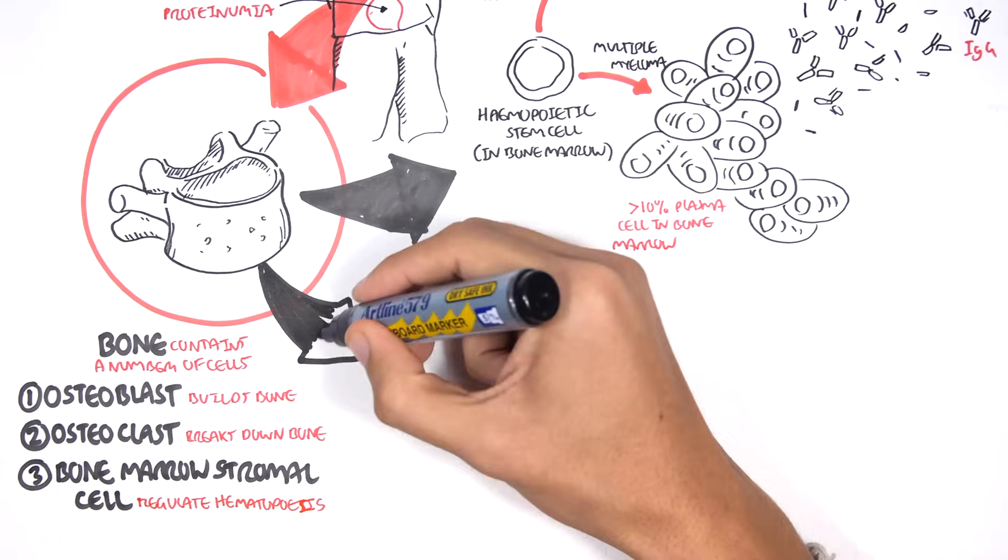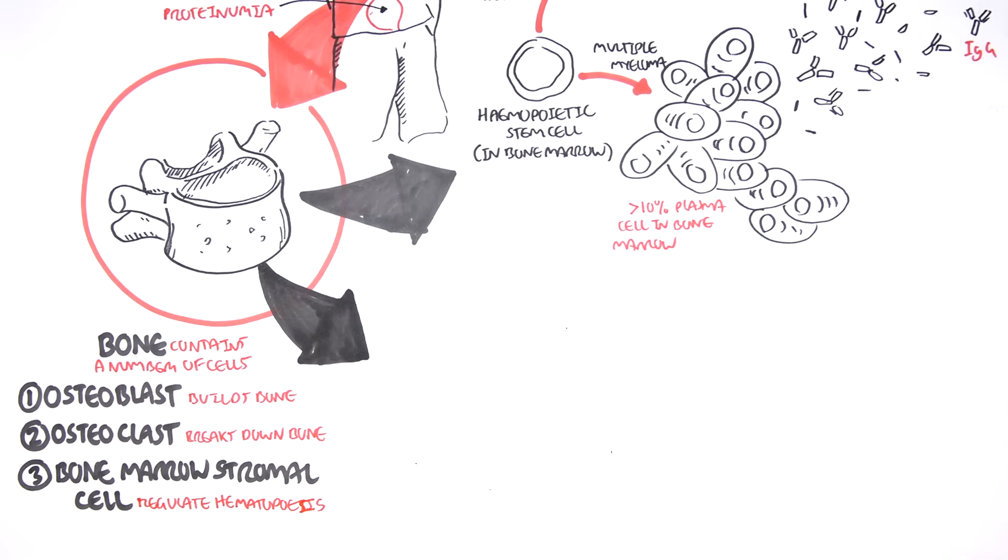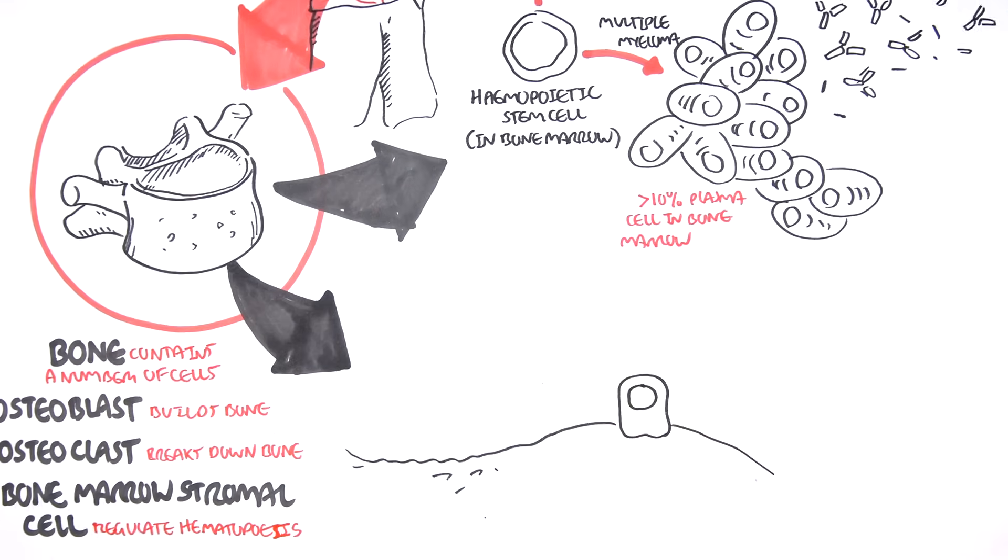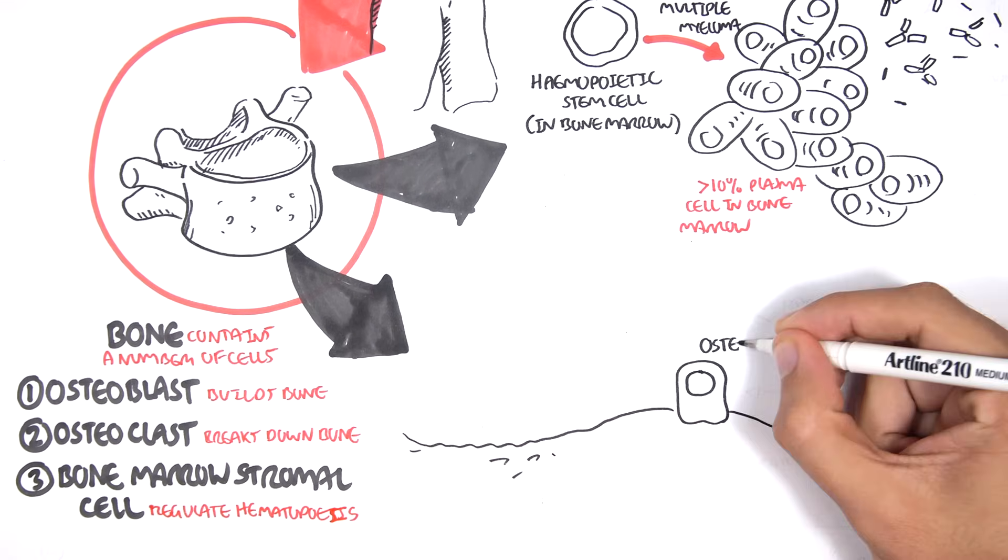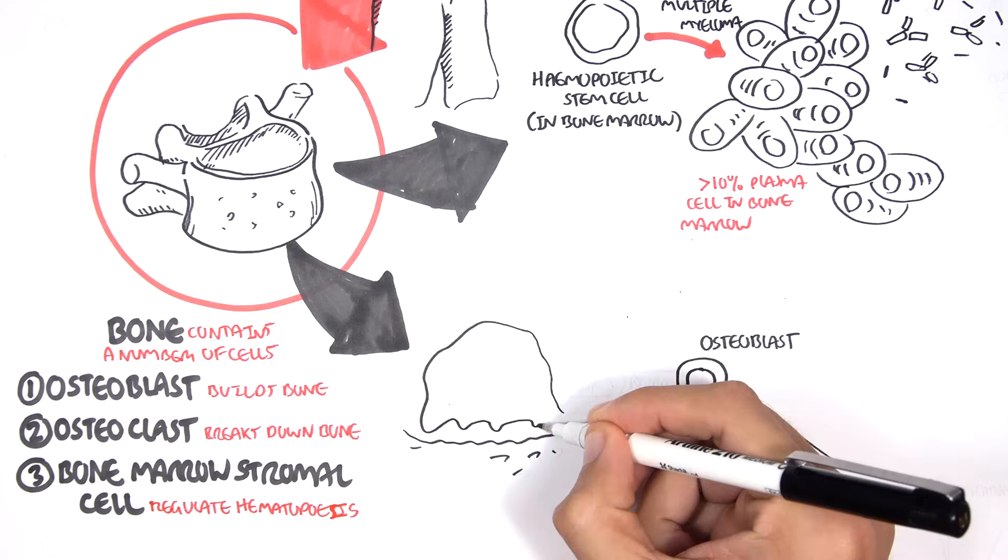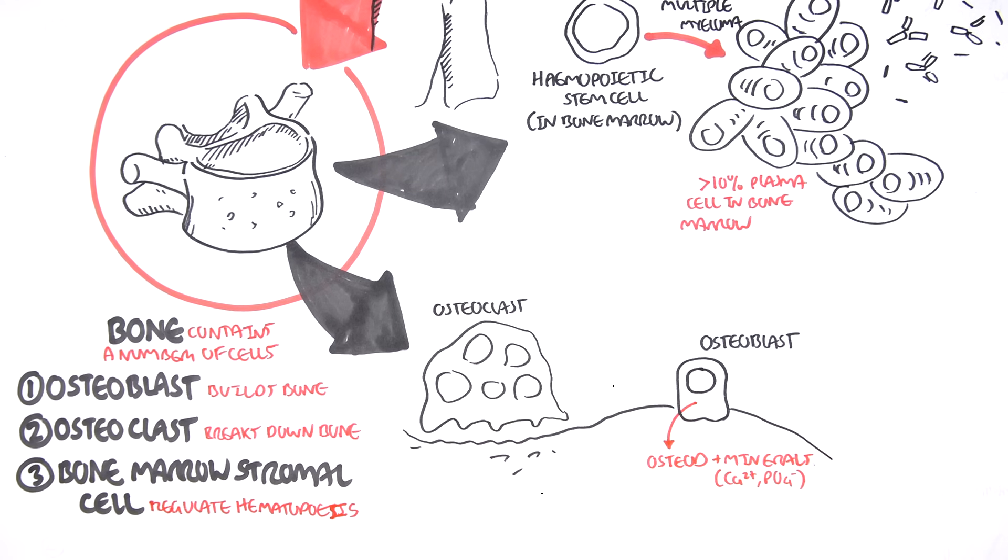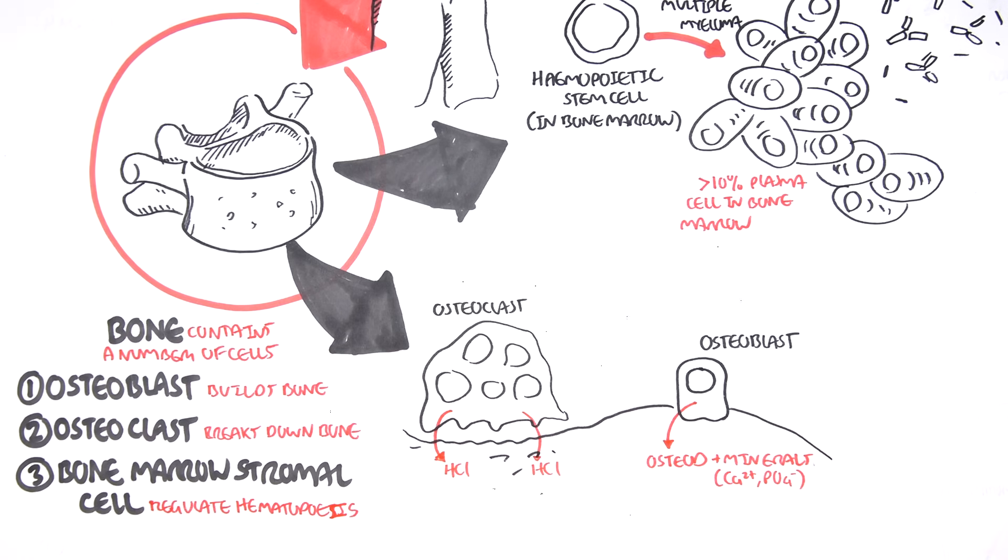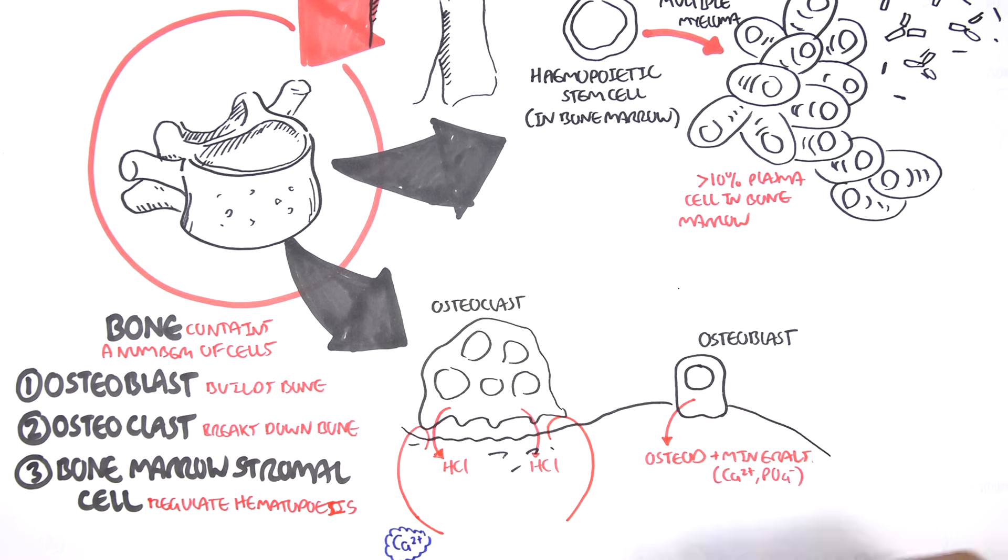Looking at this diagrammatically, here we have osteoblasts, an osteoblast which will secrete osteoids. And which together with minerals, calcium and phosphate, they will form strong bones. Osteoclasts, on the other hand, break down bone by secreting hydrochloric acid. The breakdown of bone results in the release of calcium and phosphate. And the calcium here will enter the plasma, the blood.